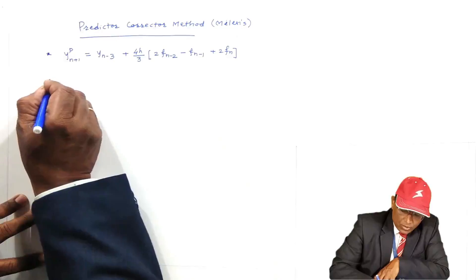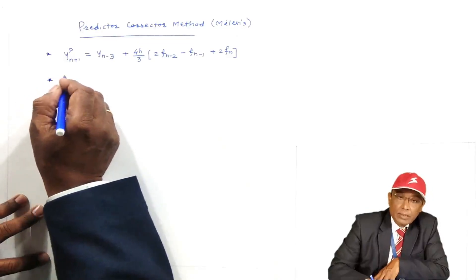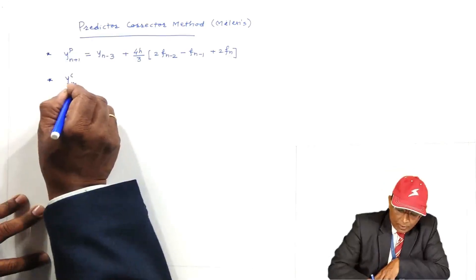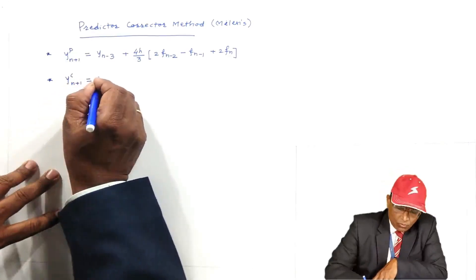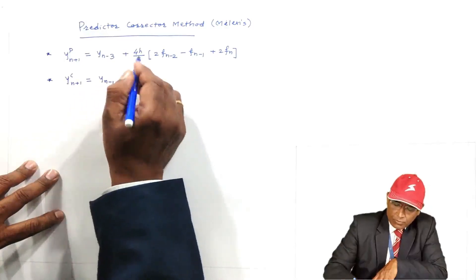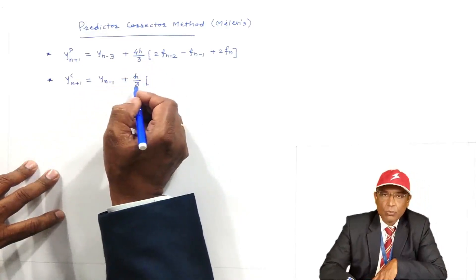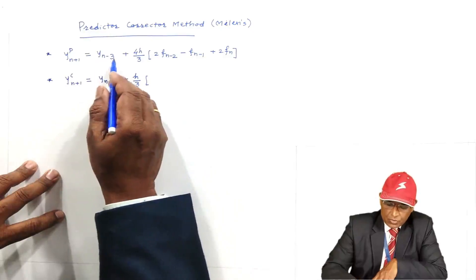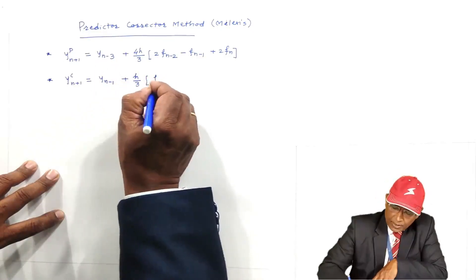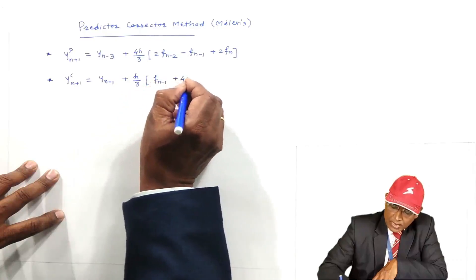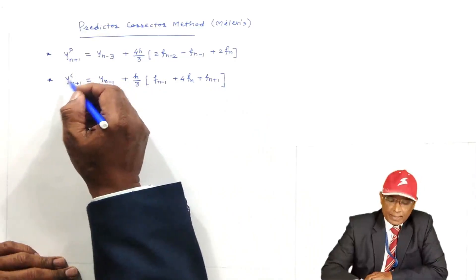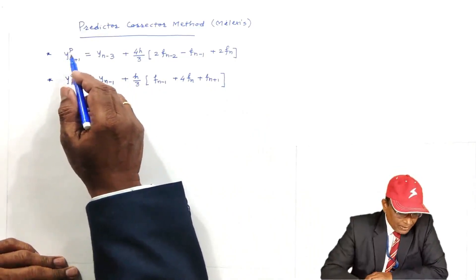Once you predict the value, you have to correct the value. The corrector formula is: Yc_(n+1) = Y_(n-1) + (h/3) × [f_(n-1) + 4f_n + f_(n+1)]. Note that in the predictor formula the coefficient is 4h/3, while in the corrector formula it is h/3. This is the Y-predictor and this is the Y-corrector.